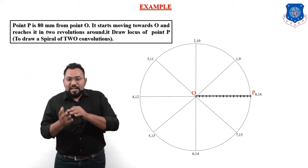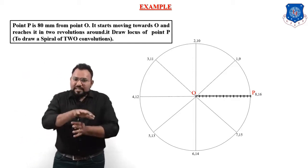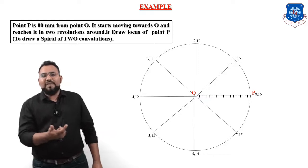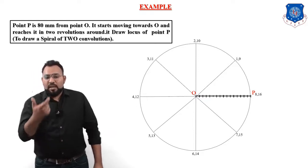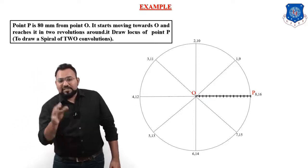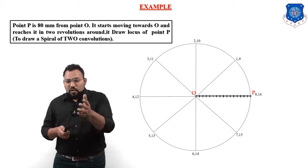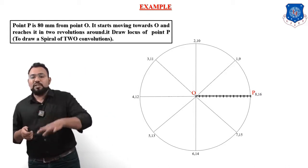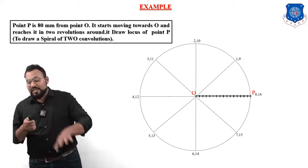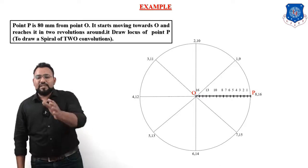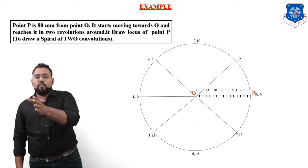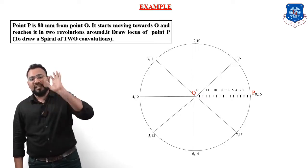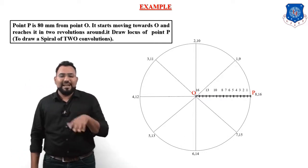Now, since the circle is divided into 16 equal parts, we also divide the line OP into 16 equal parts. On your screen you can see 16 divisions on line OP. We give them numbering 1, 2, 3, 4, 5, up to 16, where point 16 is point O itself.